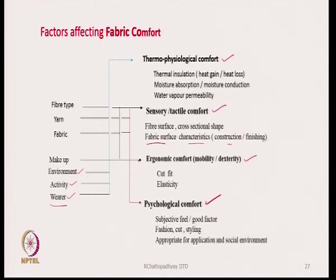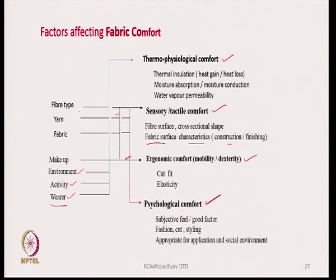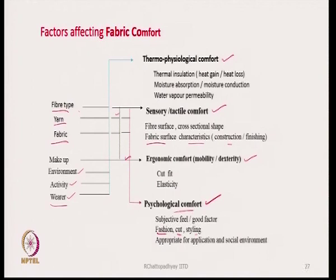Ergonomic comfort depends on fiber type — this arrow indicates it — and on the makeup, which is the size and the way the fabric has been converted into a particular uniform or dress. It also depends on the type of fiber, yarn, and fabric. Psychological comfort is basically a subjective feel-good factor — it is very subjective in nature. It depends on fashion, cut, and styling, and these are all dependent on fiber type, yarn, and fabric, as indicated by the orange arrow.